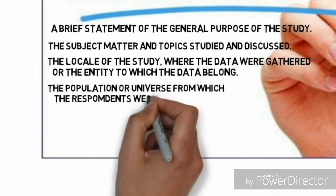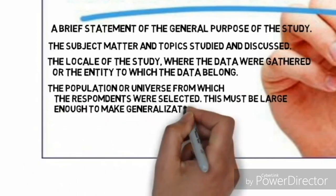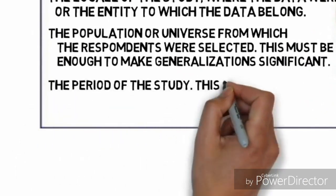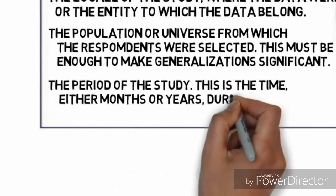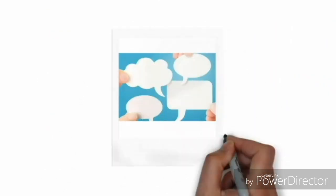The population, a universe from which the respondents were selected. This must be large enough to make generalizations significant. And the period of the study, this is the time, either months or years, during which the data were gathered.